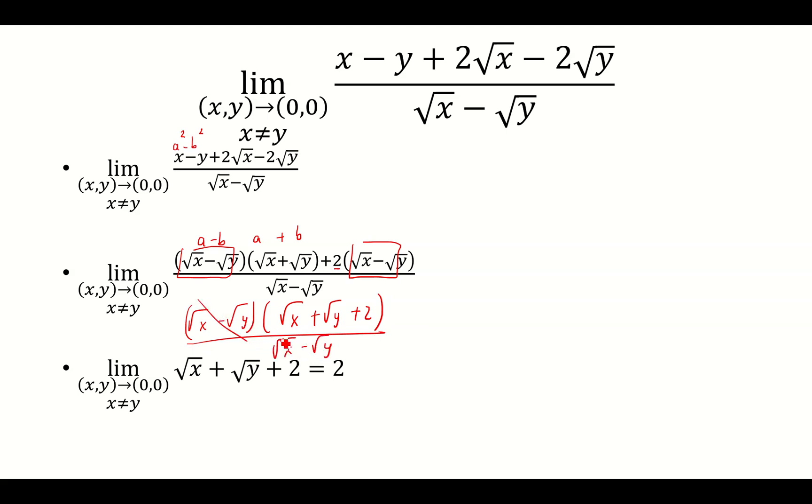The square root of x minus square root of y is going to cancel. I'm left with the square root of x plus square root of y plus 2. Now I'm able to plug in x and y equals (0,0). So I get my limit is 2.